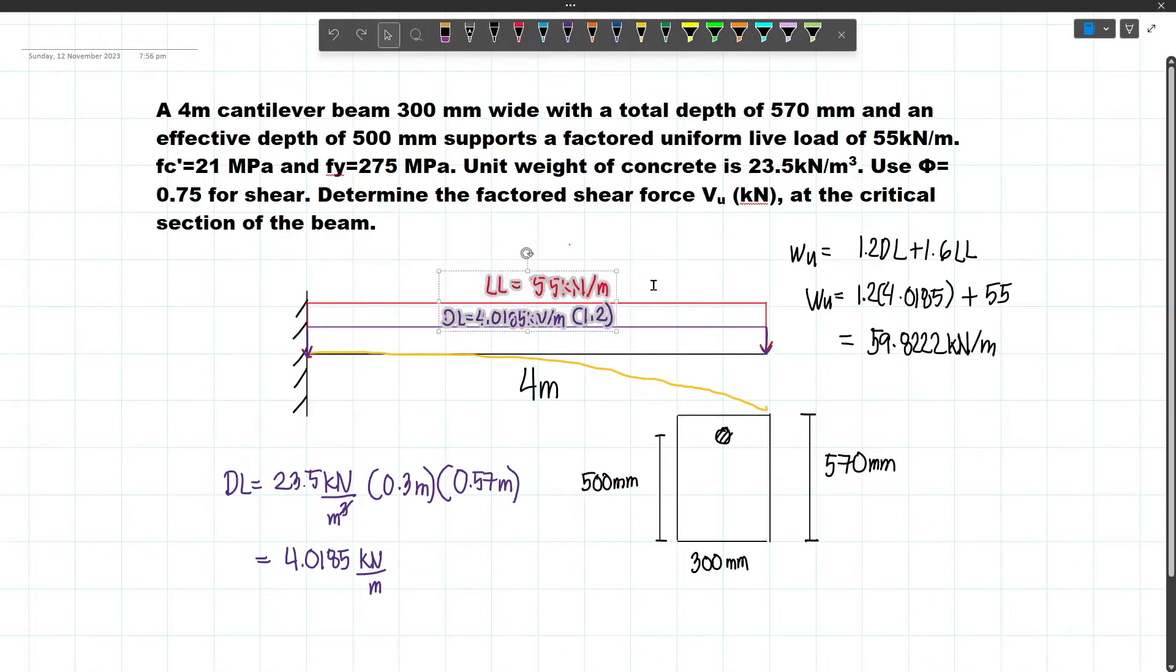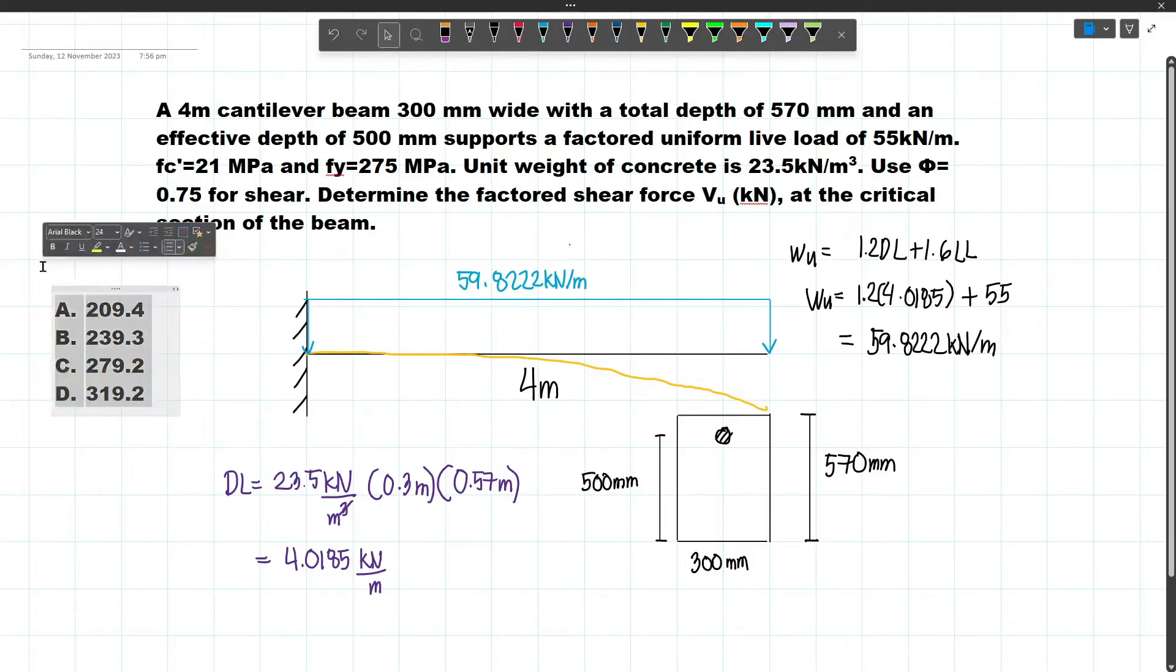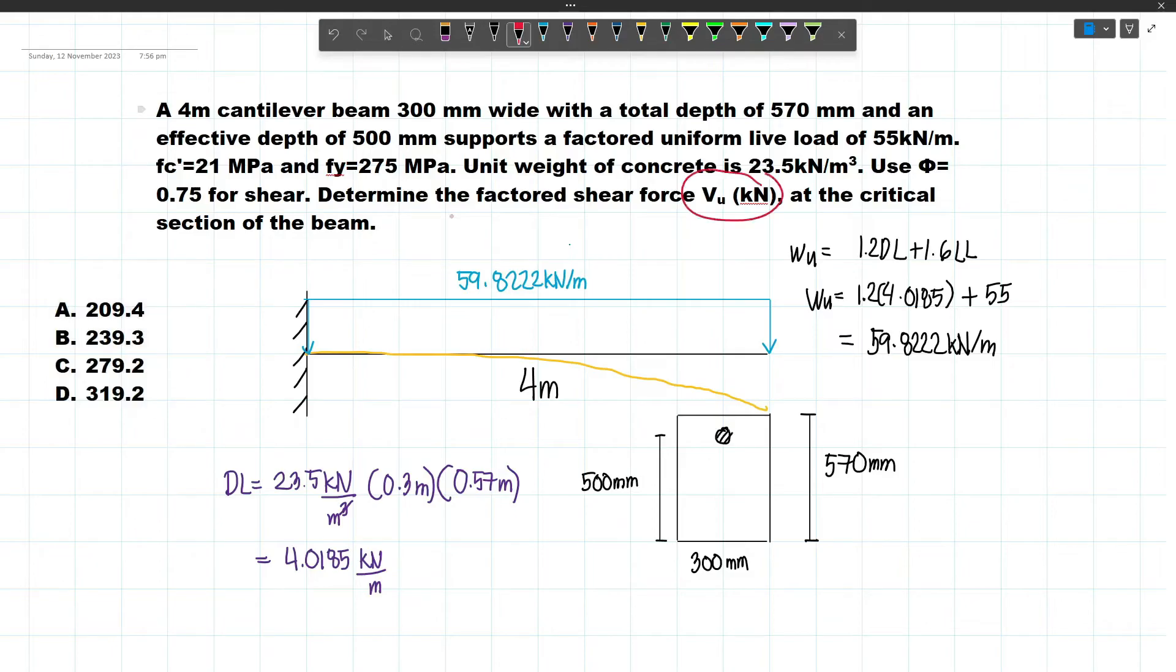Let's change this to one load. The combined load equals 59.8222 kilonewton per meter. The choices for this problem are the following. How can we get this? The concept is that VU occurs at a distance d from the support.